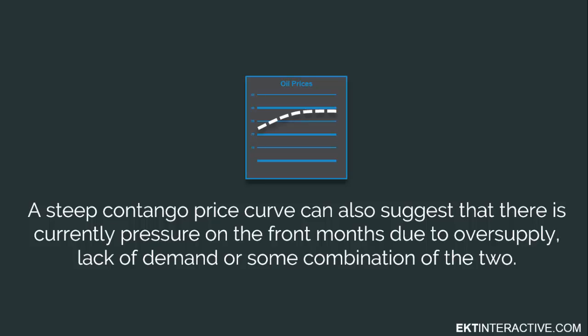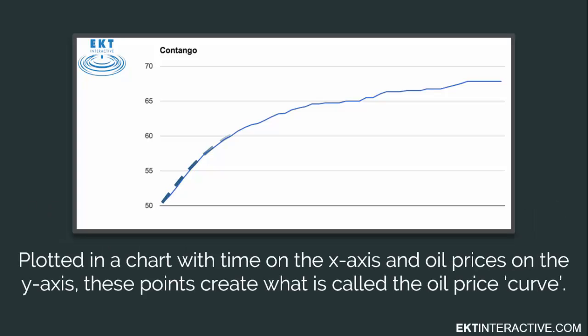A steep contango curve can also suggest that there is currently pressure on the front months due to an oversupply, lack of demand, or some combination of the two in the marketplace. Plotted in a chart with time on the x-axis and oil prices on the y-axis, these points create what is called the oil price curve.